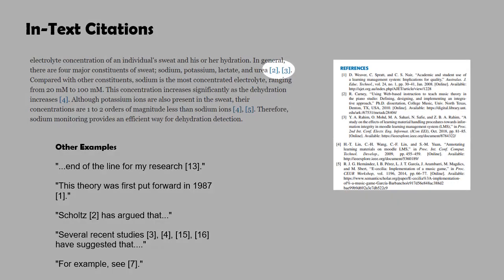When citing multiple sources at once, the preferred method is to list each number separately, in its own brackets, using a comma or dash between the numbers.